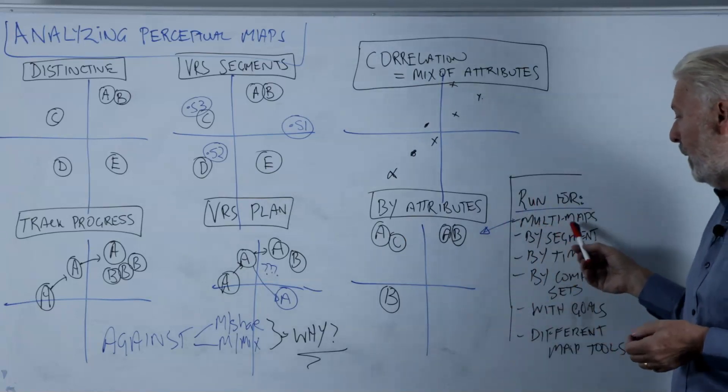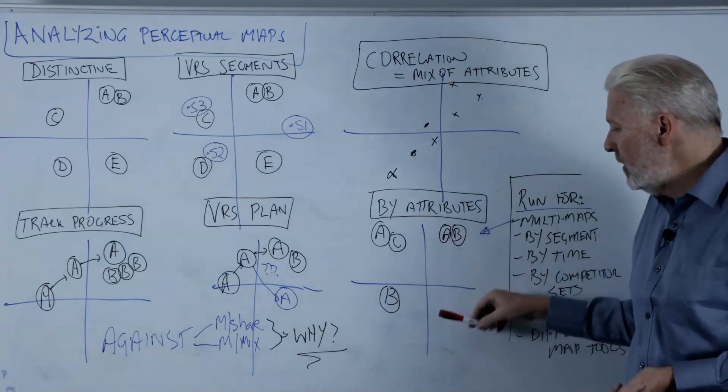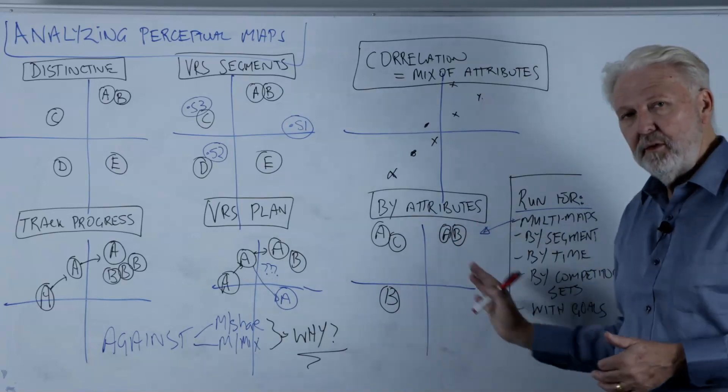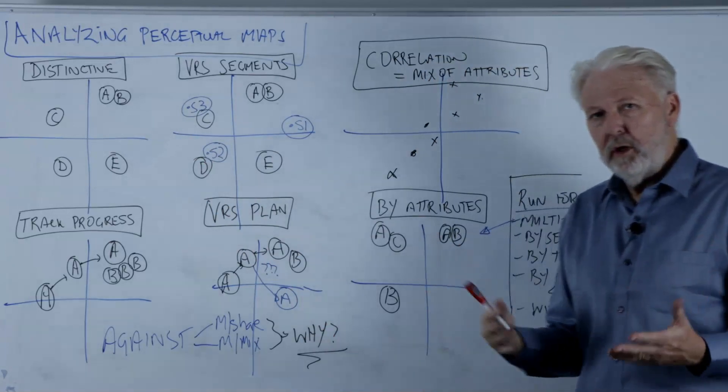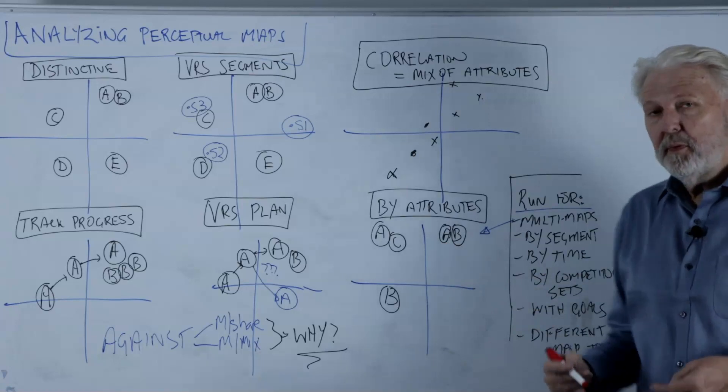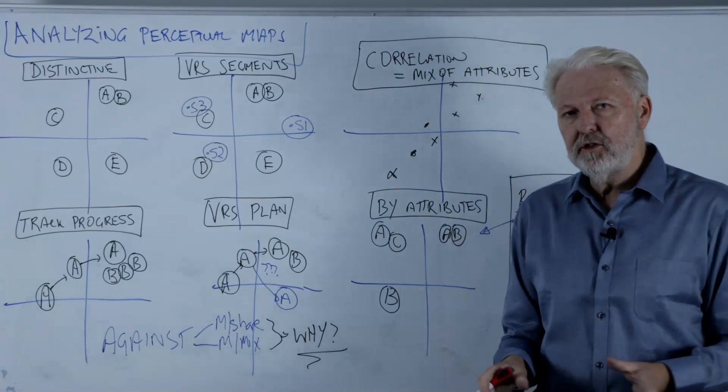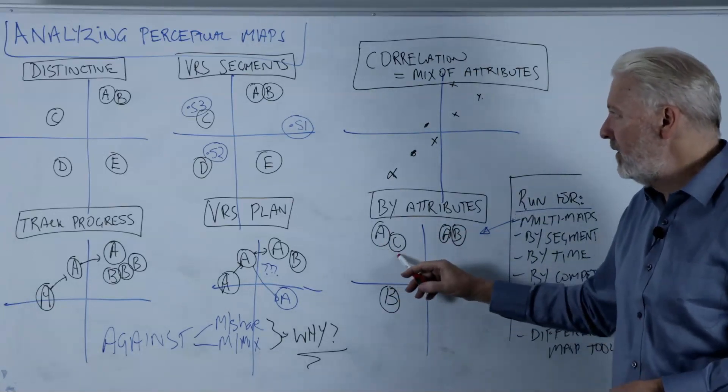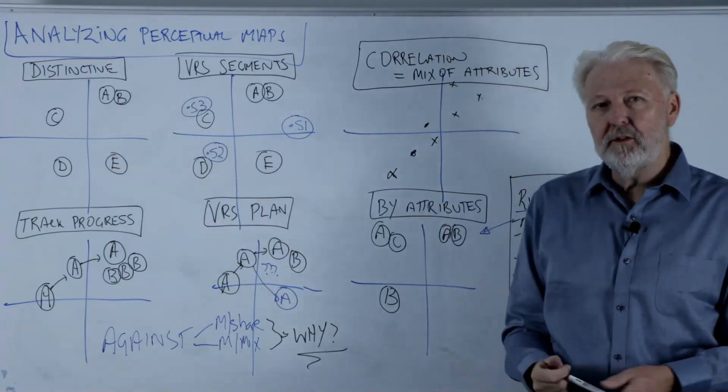So for this, we're looking at multi-maps, so more than one map. We've got data, so we keep changing these maps by adding a different attribute. And we construct different views. So initially we had A and B as being side-by-side competitors, which is map one. But then we produce a different map that has two different attributes and the configurations change. And suddenly for those two attributes, A and C are direct competitors and B is sitting out by itself.